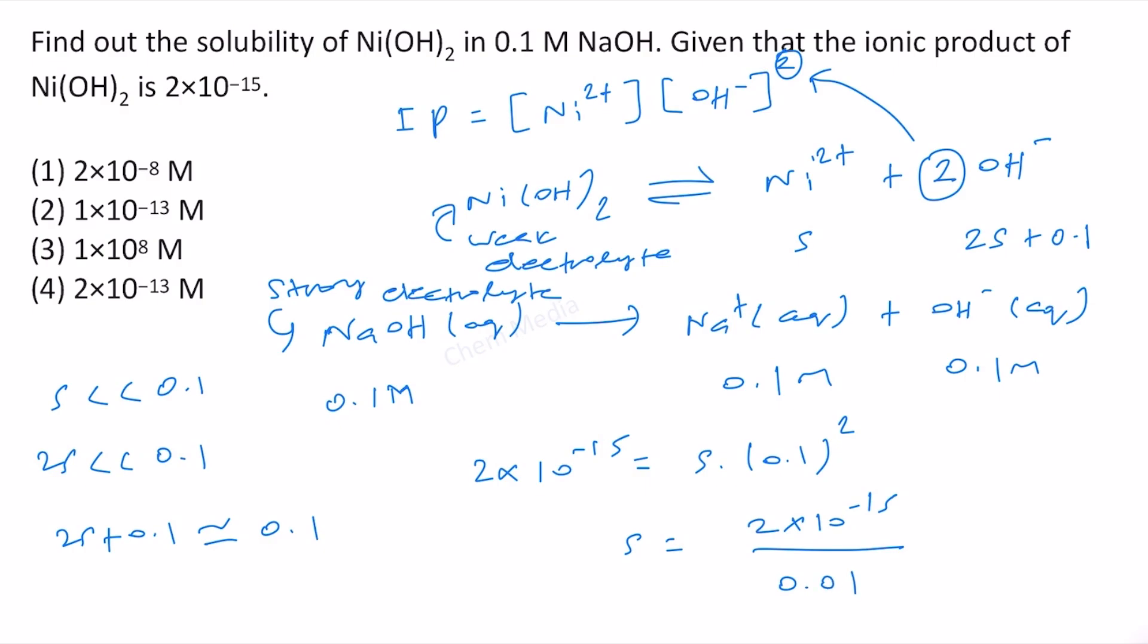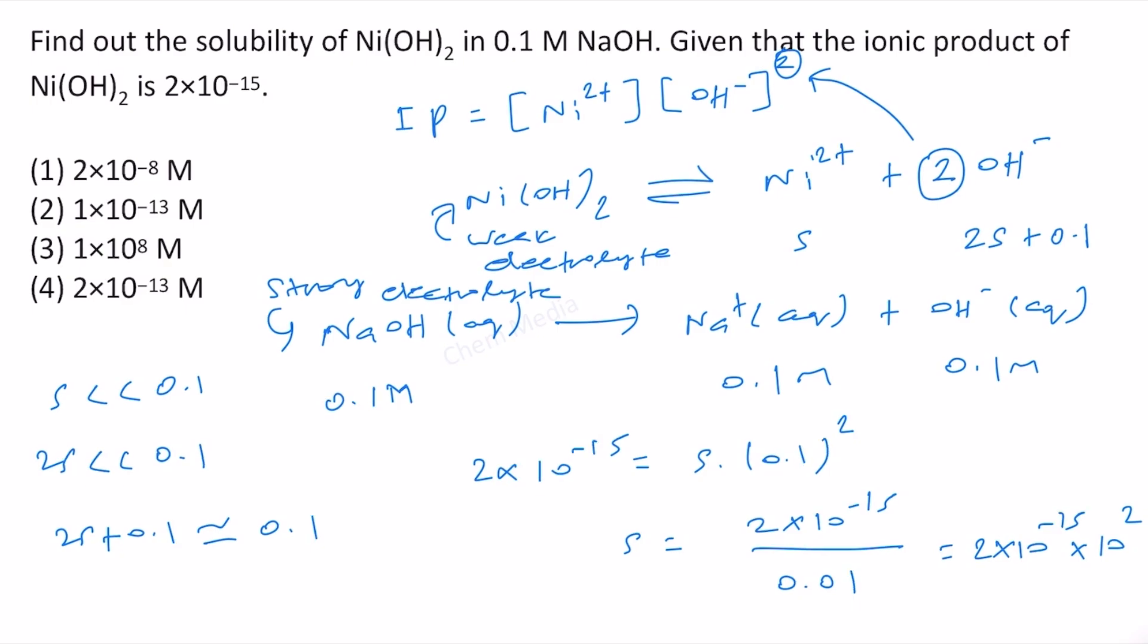When this goes up, it will become 2 times 10 to the power minus 15, and then this will be 10 to the power 2. Therefore the solubility is equal to 2 times 10 to the power minus 13. Therefore option 4 is correct.